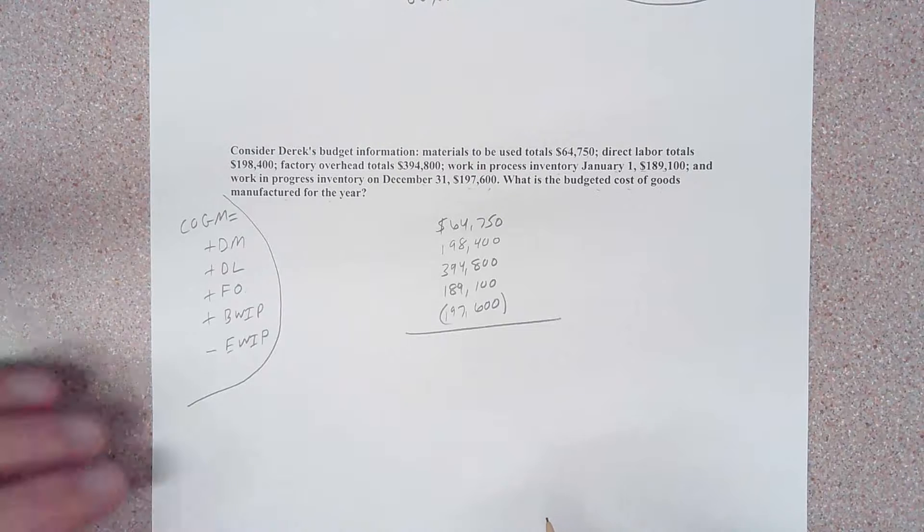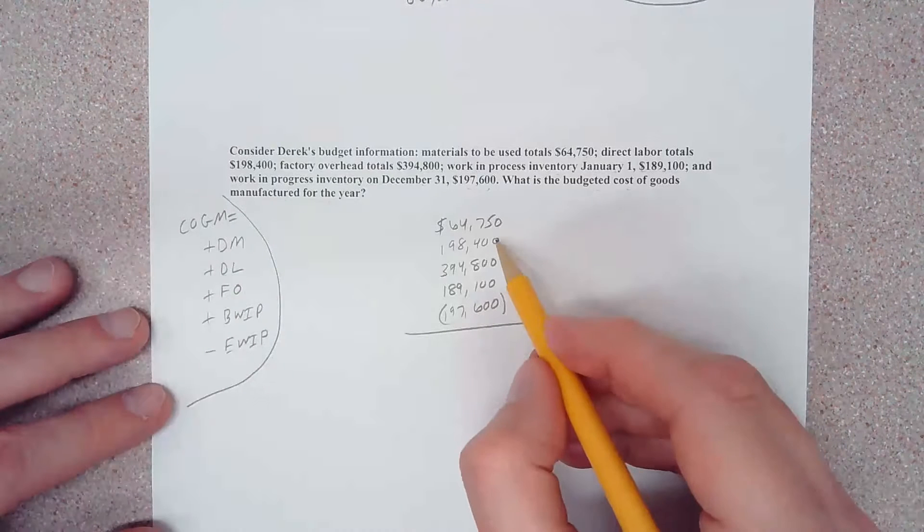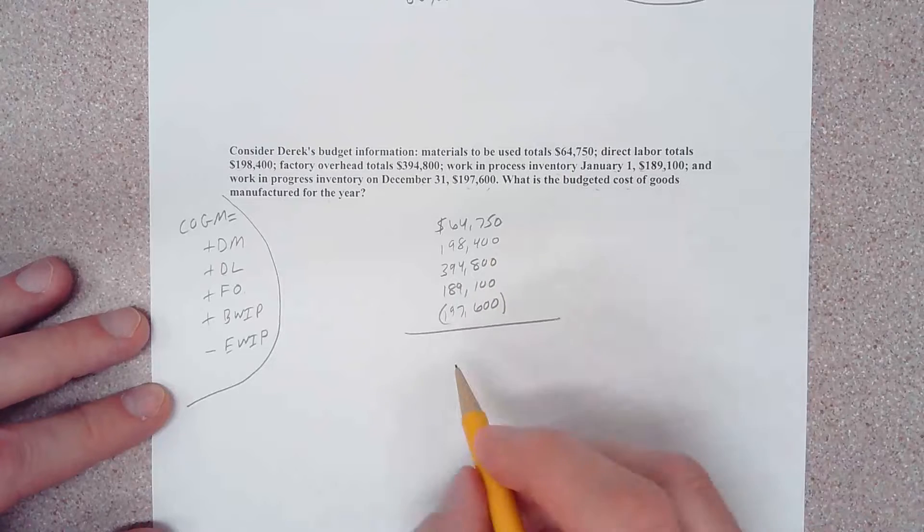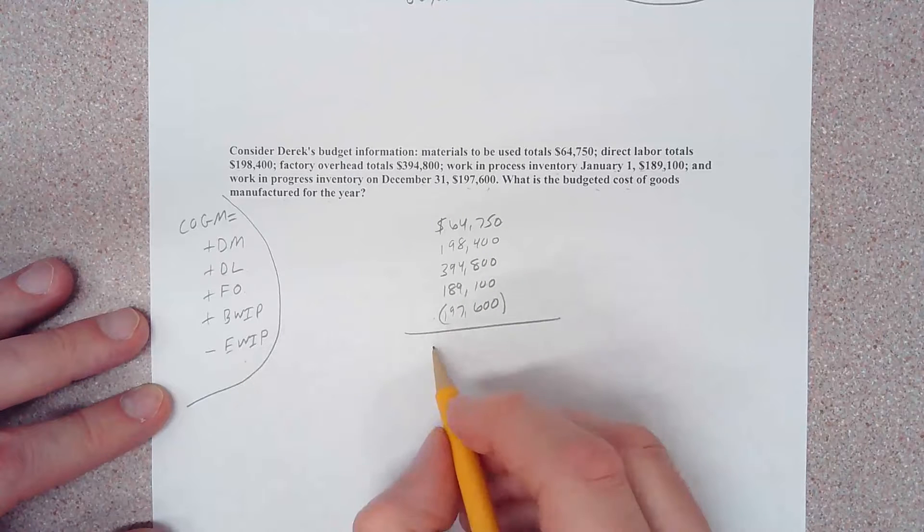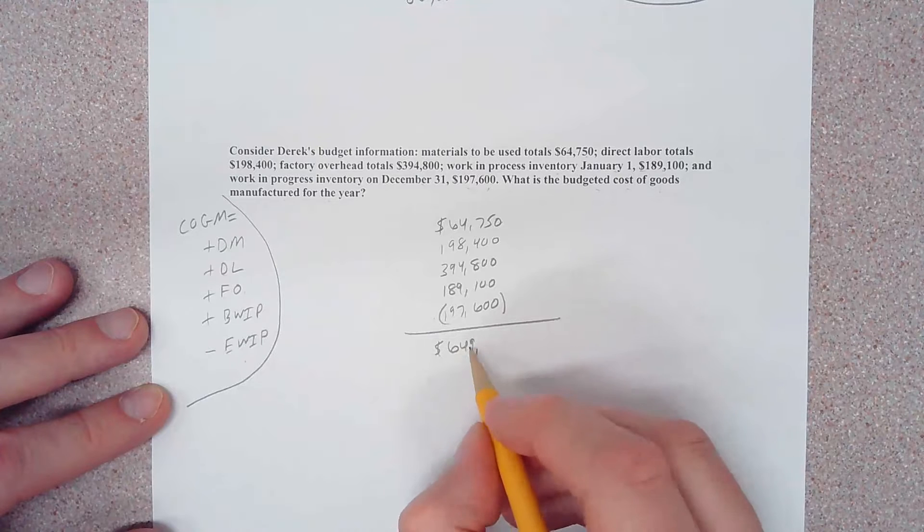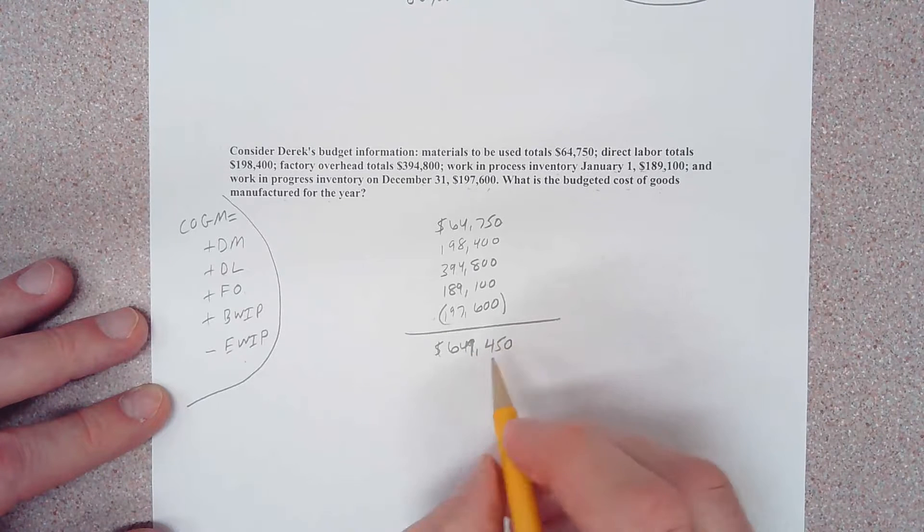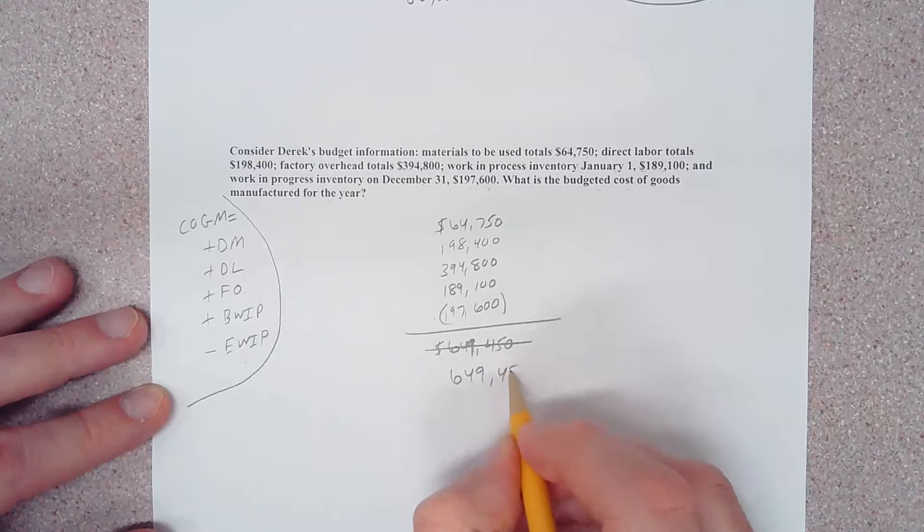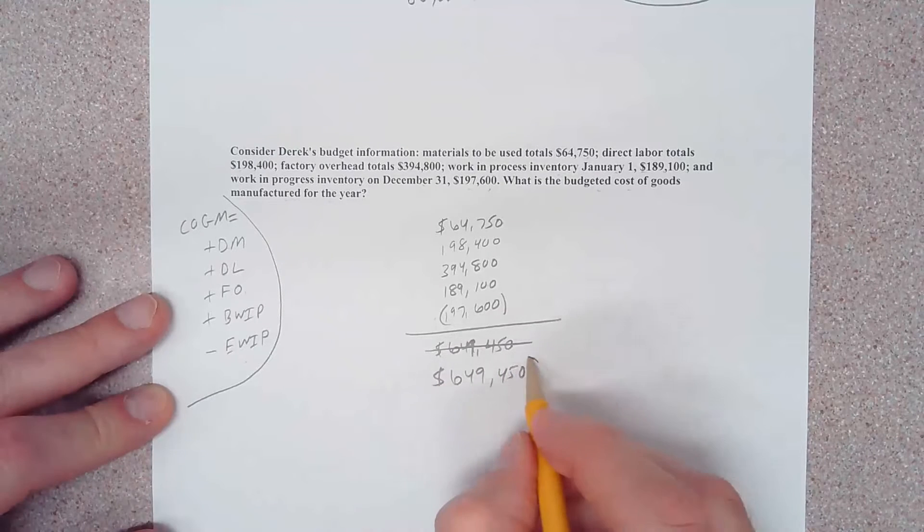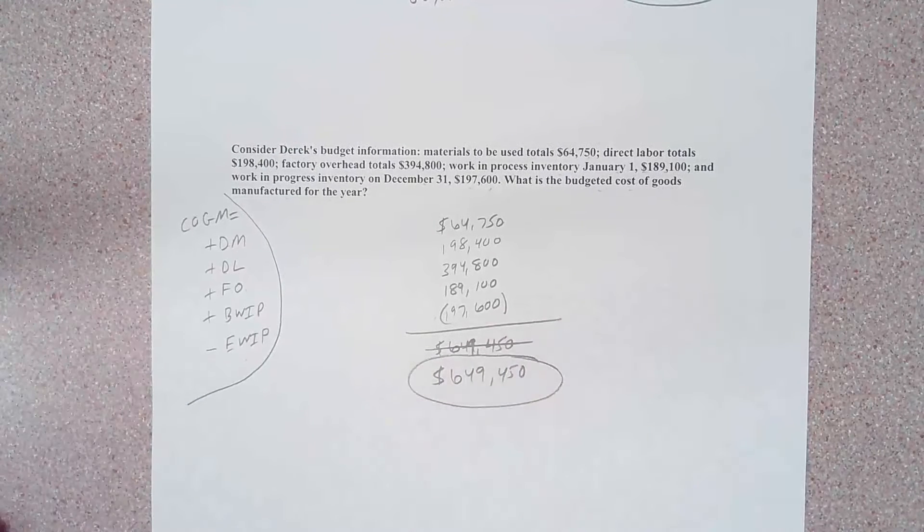And work in process on December 31st is 197,600, but we're going to do that as a negative. Okay, so if we take these one, two, three, four positive numbers and subtract out our ending work in process, my total comes to 649,450. That's $649,450.